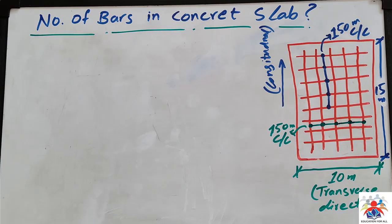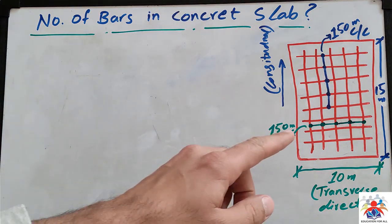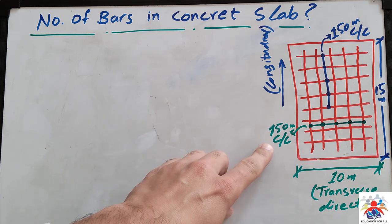Hello and welcome to my YouTube channel. In this video I am going to explain how to calculate number of bars in concrete slab. As you can see in the diagram we have a slab 10 meter wide and 15 meter long longitudinal direction, and we have a transverse direction.